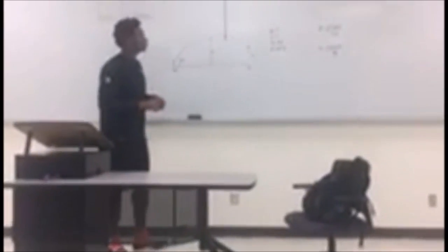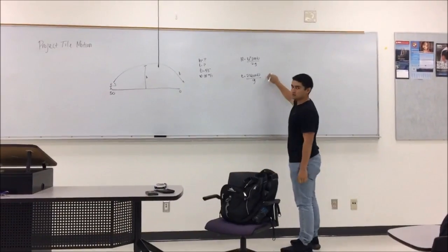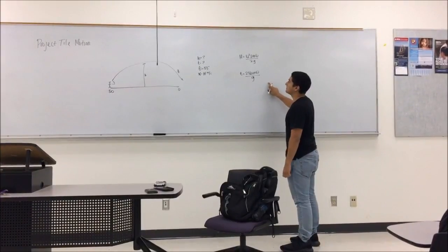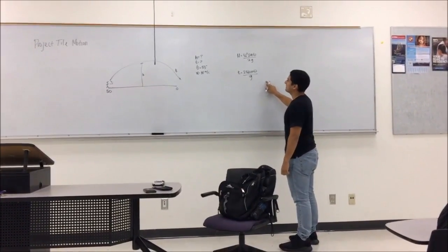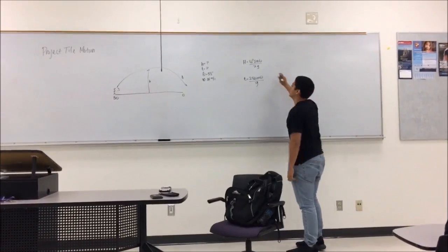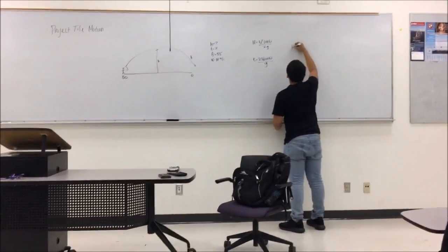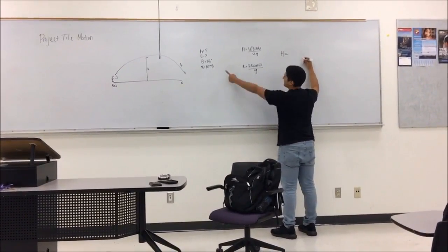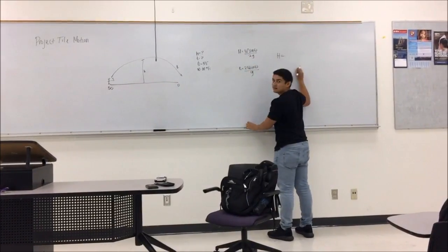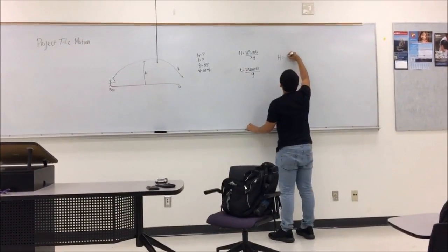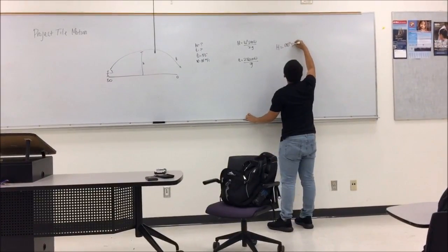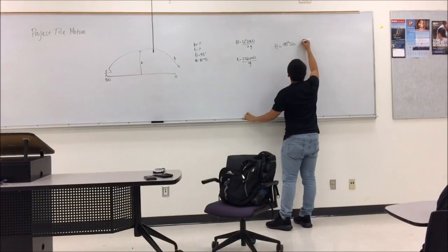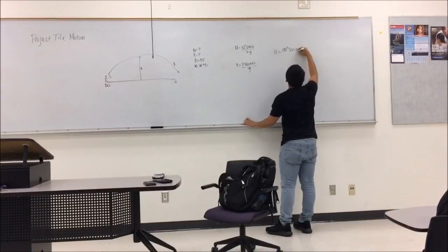Nobody wants to come up here? Cesar? So which one do I use in order to find height? You have to go with the one that says H, so B. This one? Yes. Alright. What do I do next? Do I plug in velocity right here? Yes. Alright — 53 degrees, correct? Yes.